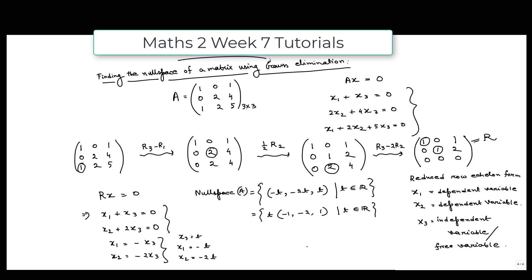This is our null space. If we vary t, we get different vectors in the null space. The vector (-1, -2, 1) spans the null space, and since it is a single vector it is already linearly independent. So this vector forms a basis of the null space of A.